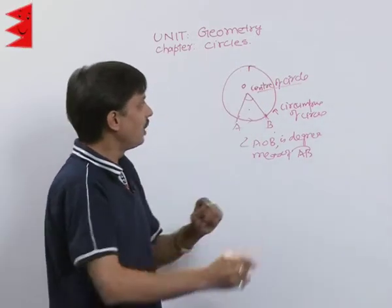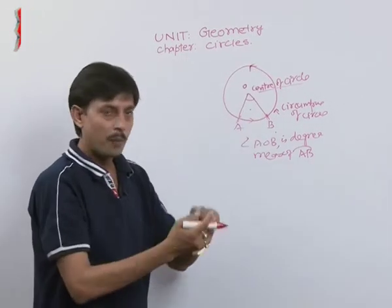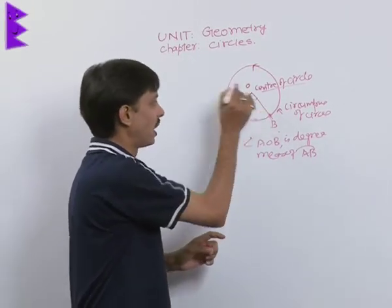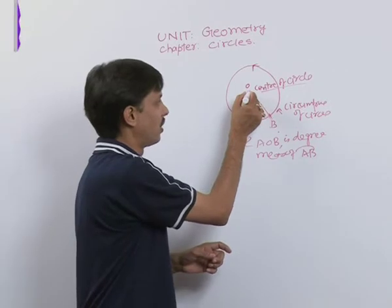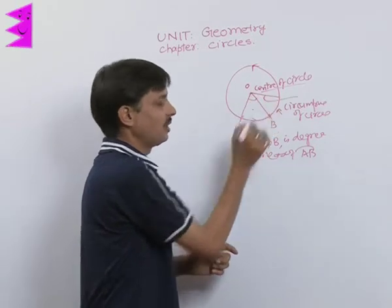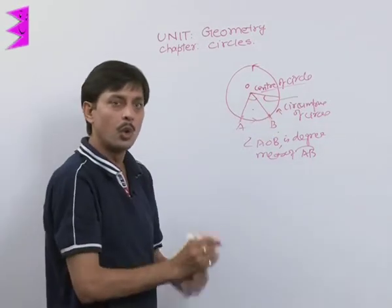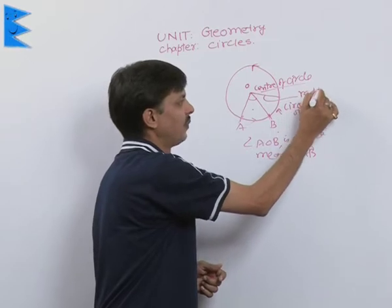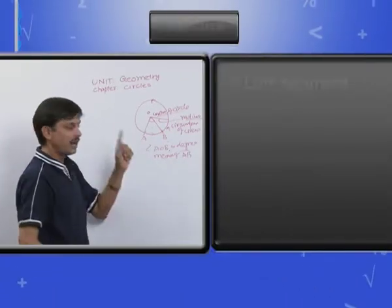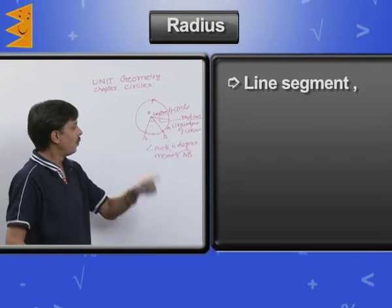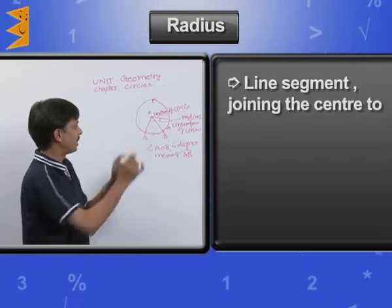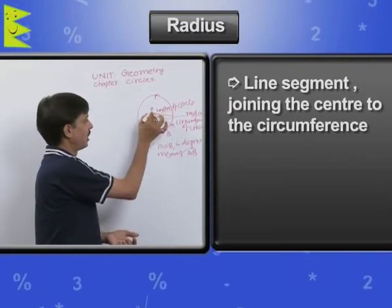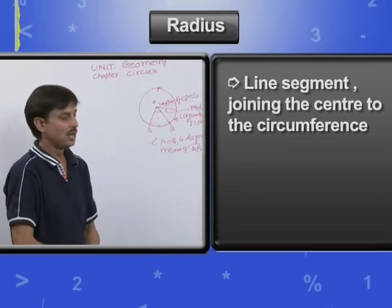If a line segment joins the center to the circumference, that length is known as the radius. The definition of radius: radius is a line segment which joins the center to the circumference of the circle.